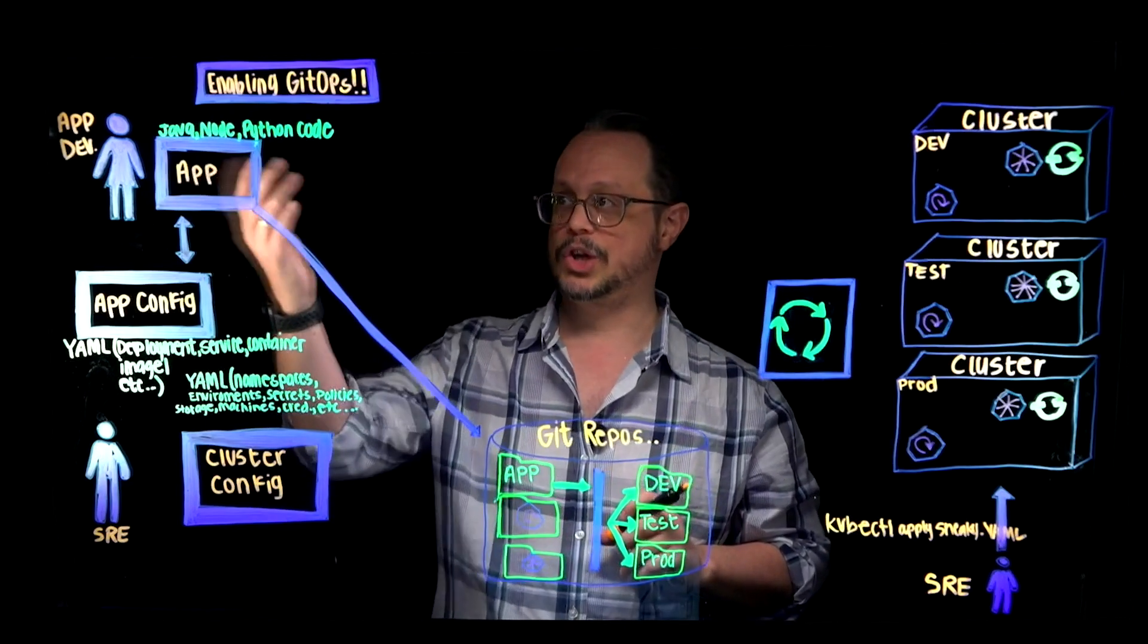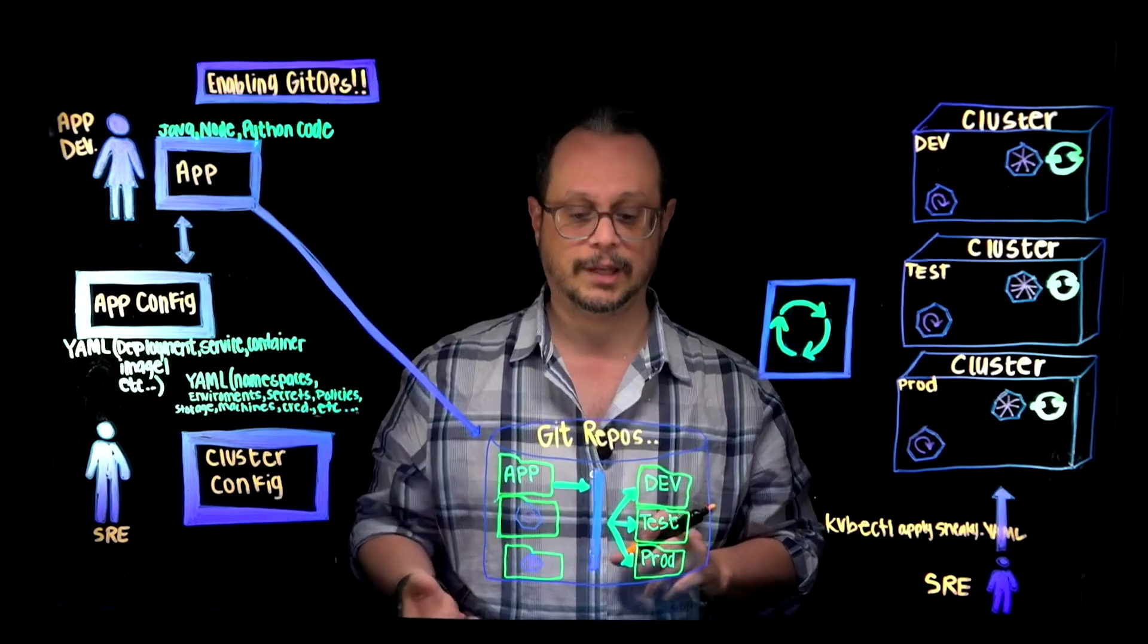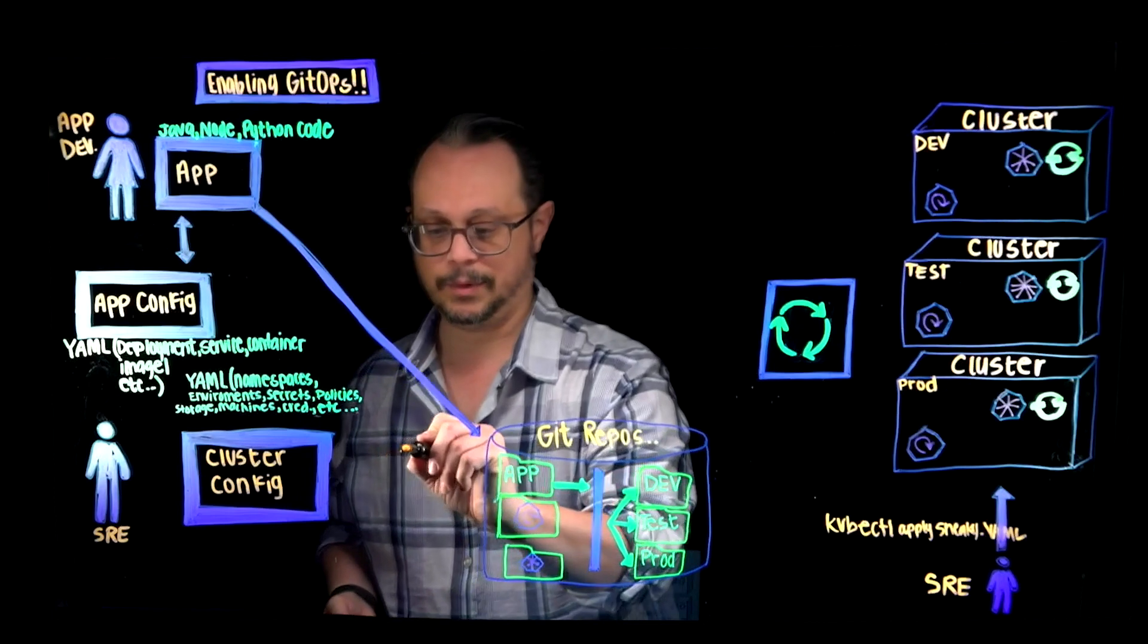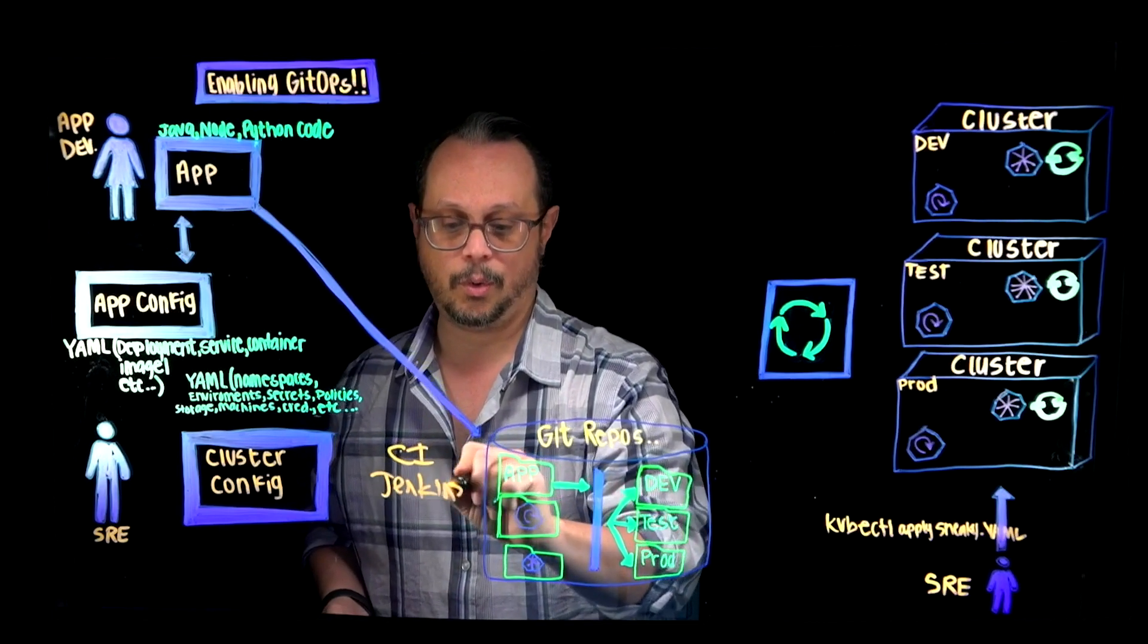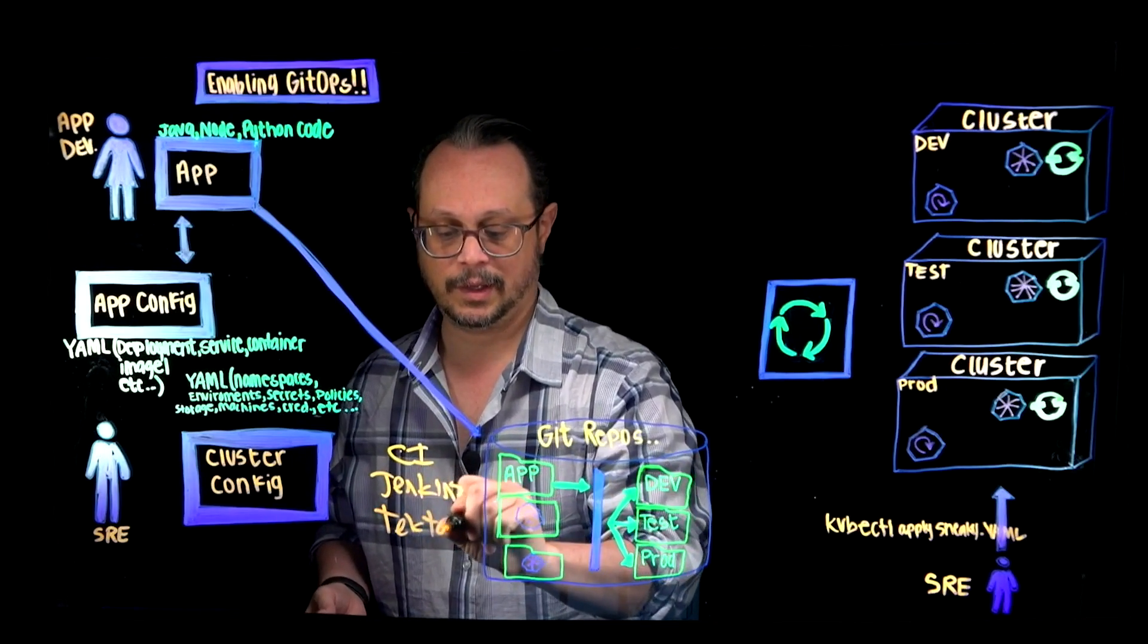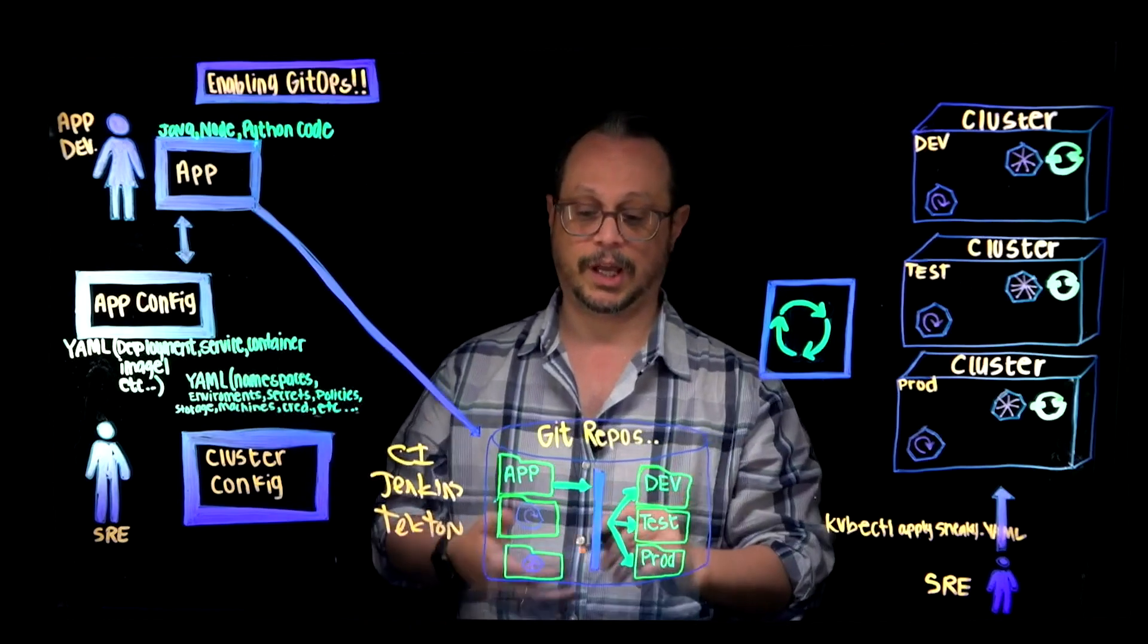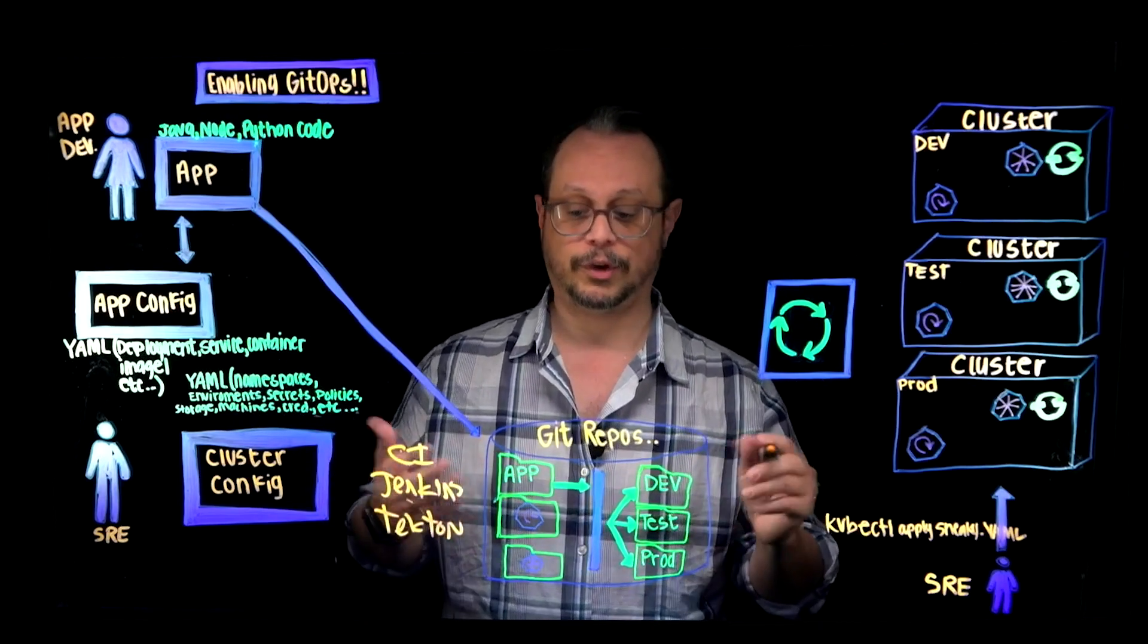For example, a developer would write Java code, Node code, Python code, check that into Git. They usually will have some type of CI process with something like Jenkins or something like a more modern Tekton environment to build an application, deploy it to servers, etc.